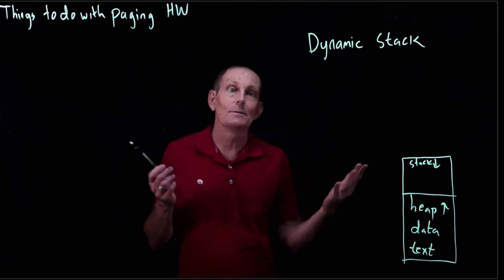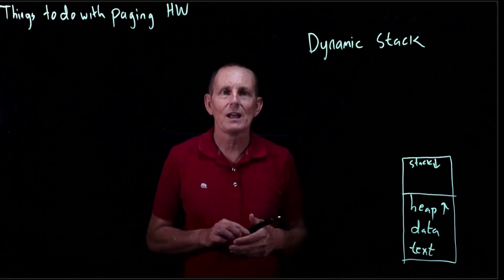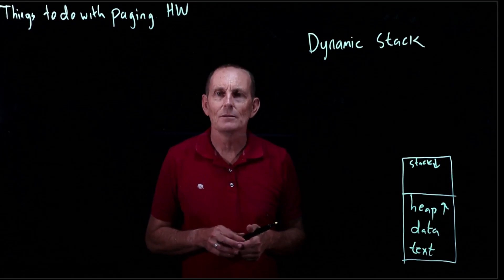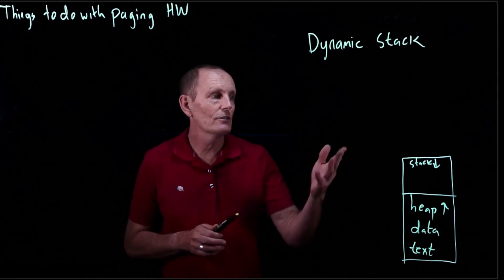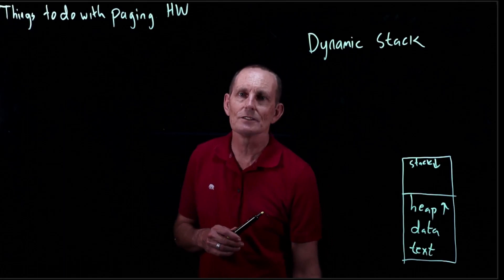I mean, we know we probably need to be at least one page big, but how big should it be? Well, it should be big enough for the process. There's no reason to over-allocate, but we should be able to use however much the process uses. So some processes are going to use very little amounts of stack. Other processes are going to use large amounts of stack.